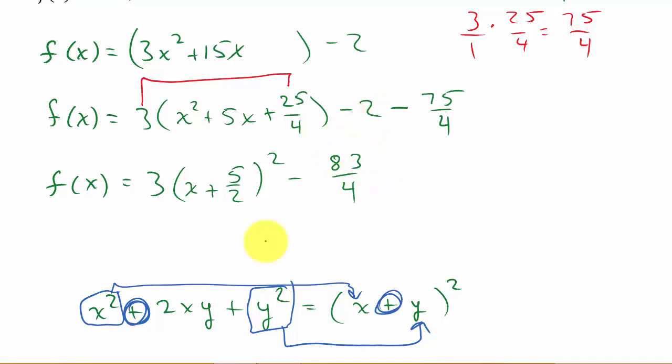So how did I get that? Well, look at this. I've got negative 2 minus 75 over 4. That equals, well, what do we have to do? This is over 1. I've got to get a common denominator. So remember, I've got to multiply this 1 by 4 to get the common denominator. So that makes that negative 8. And this is going to stay at 75. And so that's going to give me negative 8 minus 75 is negative 83 over 4.